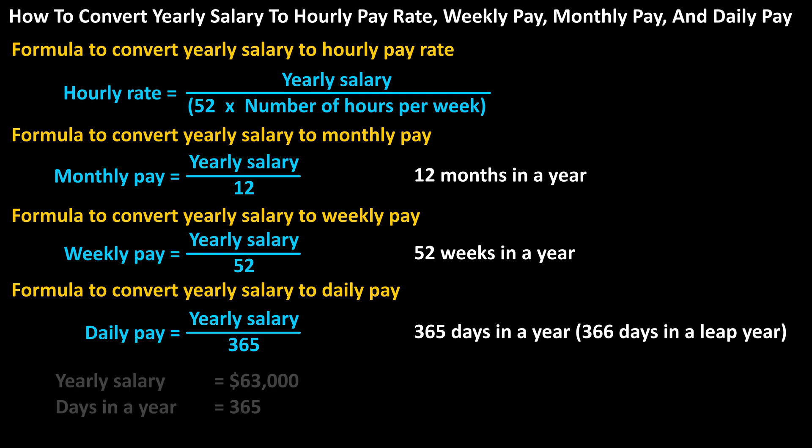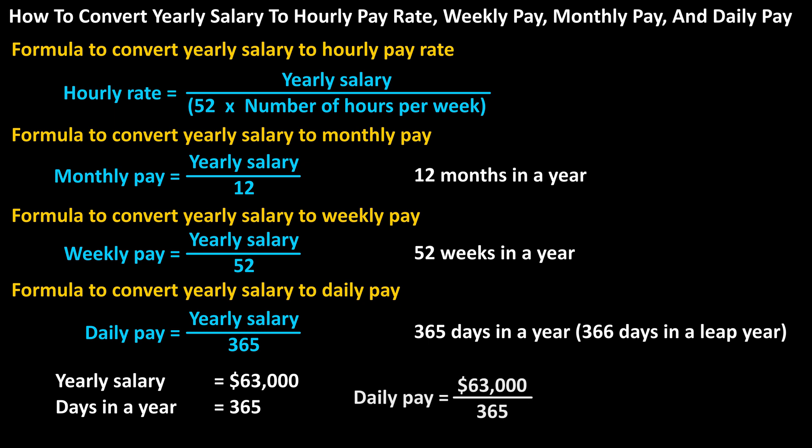As an example, if someone makes $63,000 a year, how much do they make per day? The formula would be: daily pay equals $63,000 divided by 365, which calculates to $172.60 per day, rounded off.